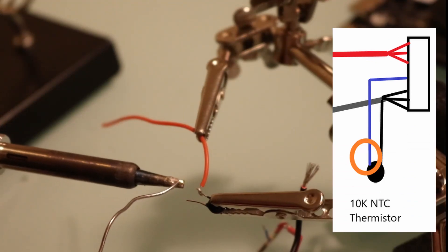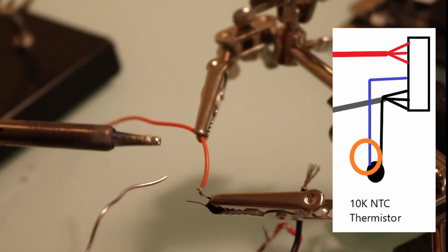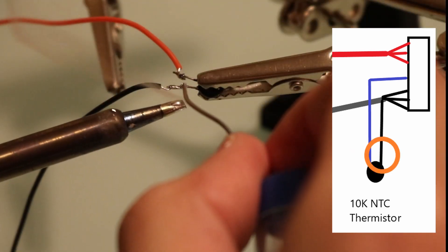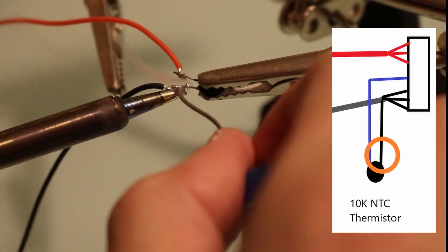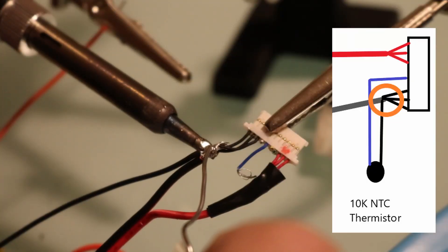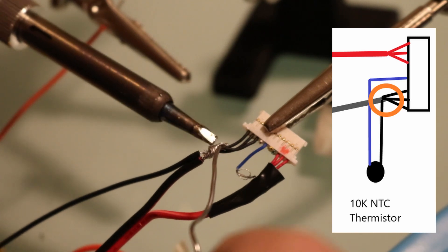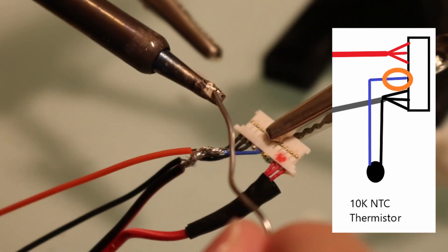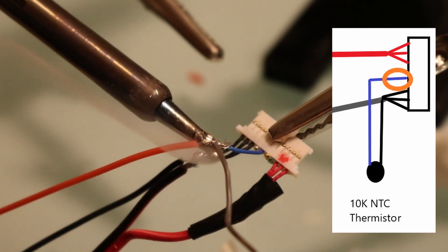Now I'm going to solder my 28 gauge wire to the ends of the thermistor. And now it's time to solder the other wire to the thermistor. So I'm going to solder all those together. And the last little bit to solder is the thermistor line to the other end of the thermistor.